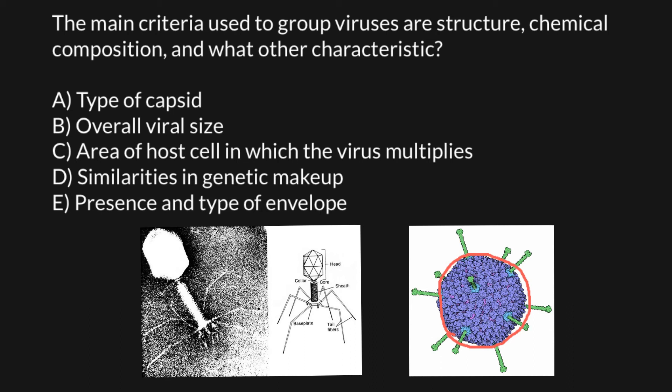Answer D — similarities in genetic makeup — would actually be the most reliable method to group viruses, just like we group people in families. For example, children of a couple have 50% of the genetic makeup of each parent. A brother and sister also share 50% of their genetic makeup, while someone unrelated will not share the same genetic makeup. So this is a very reliable method to group viruses based on similarities in genetic makeup.